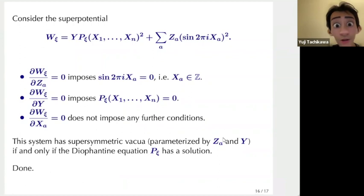Let's study the supersymmetric condition. The derivative with respect to Z needs to be zero and that imposes the condition that sine of 2πrx is zero which means that x needs to be integer. The derivative with respect to Y says that P_ξ(X1,...,Xn) needs to be zero. And you can check that the derivative with respect to Xa does not impose any further restrictions. This system has supersymmetric vacua parameterized by Za and Y if and only if the Diophantine equation P_ξ has a solution.